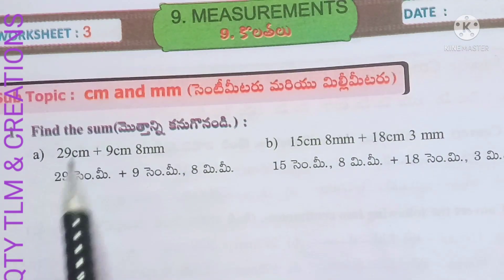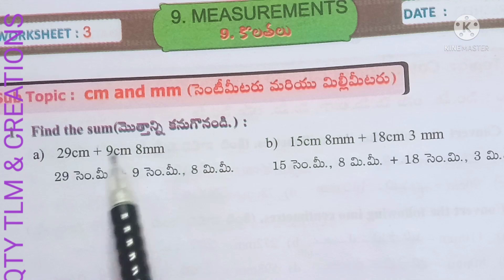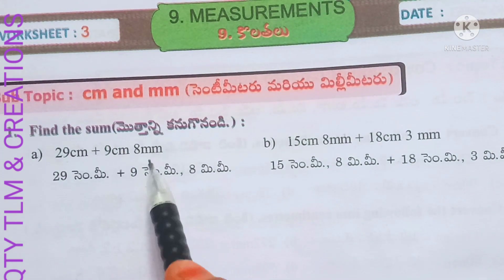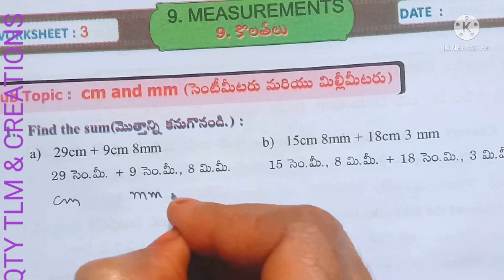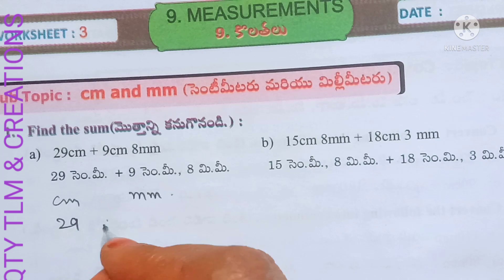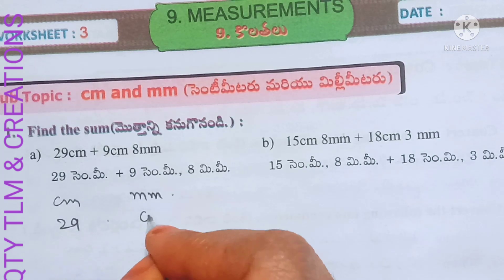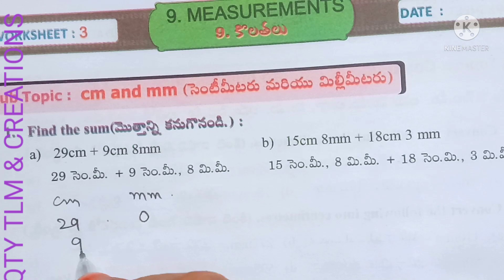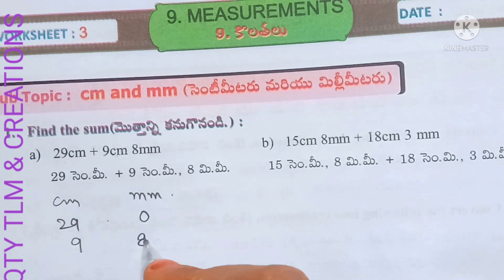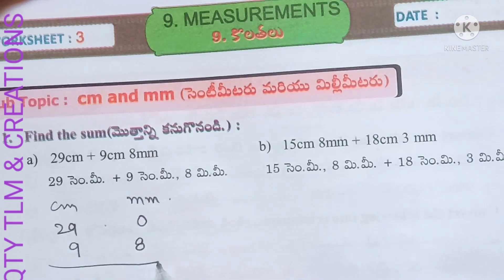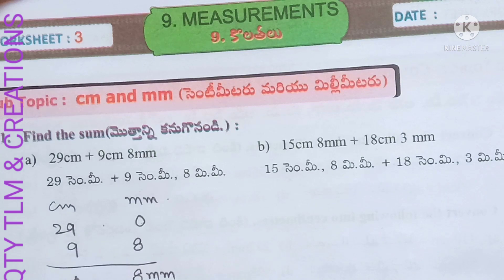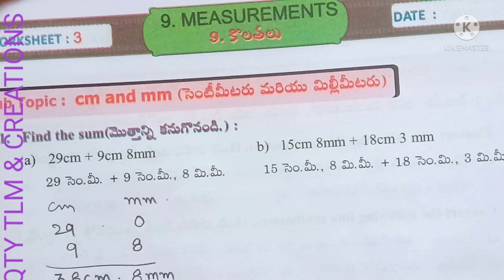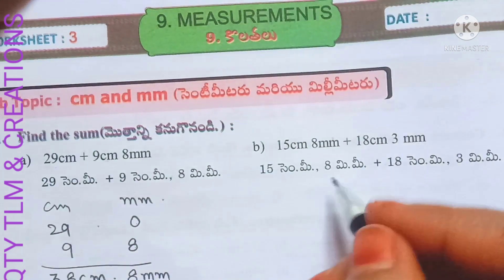Worksheet number three, subtopic: centimeter and millimeter. Find the sum: 29 centimeters plus 9 centimeters 8 millimeters. We add centimeters to centimeters and millimeters to millimeters. 29 centimeters has no millimeters so we write zero. 9 centimeters and 8 millimeters. Zero plus 8 equals 8 millimeters, and 9 plus 29 equals 38 centimeters and 8 millimeters.